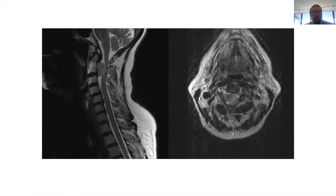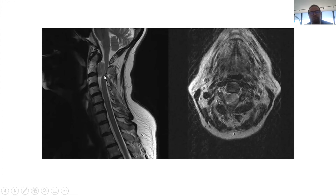This is another sequence — a sagittal T2, where CSF is hyperintense. This is the same lesion, and if you look closely there is a cleft between the lesion and the spinal cord. Within the spinal cord you can see a little bit of increased signal representing either a contusion, scar tissue, or edema. This is a space-occupying intradural extramedullary lesion causing spinal cord compression, explaining the patient's symptoms.